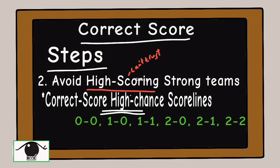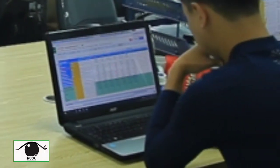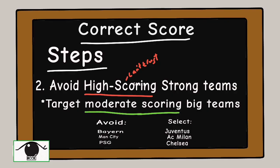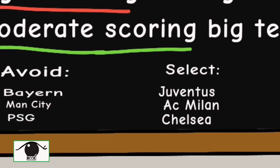Obviously, you have a higher chance of winning if you randomly select three matches to end with one of the common scorelines than you will have if you were trying to predict a three-to-one match or any high scoreline. The high-scoring teams cannot be trusted, so we need to stick with strong teams that score moderate goals.